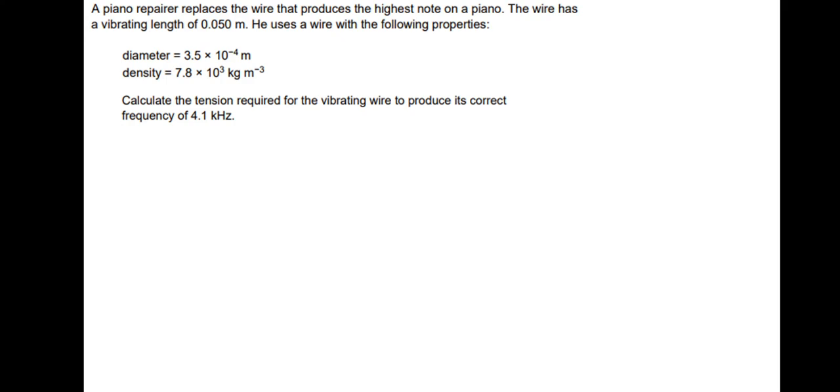So I hope that's okay. I would like to have got this one. It's just an exam style question. So let's pause and have a go. A piano repairer replaces the wire that produces the highest note on a piano. The wire has a vibrating length of 0.05 meters. He uses a wire with the following properties. Diameter, 3.5 times 10 to the minus 4 meters. Density, 7.8 times 10 to the 3 kilograms per meter cubed. Calculate the tension required for the vibrating wire to produce its correct frequency of 4.1 kilohertz or 4,100 hertz.